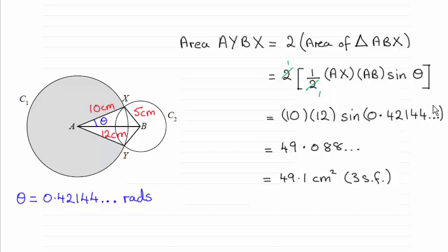Make sure your calculator by the way is in radians mode because you're taking the sine of an angle in radians. And that gives us 49.088 and so on, which turns out to be 49.1 cm squared, to three significant figures.